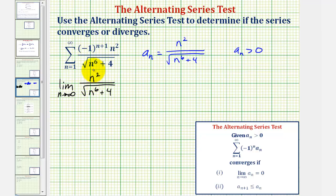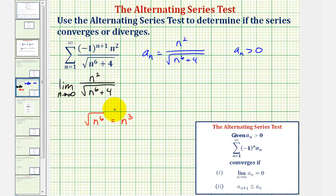Notice how the numerator is degree two. Looking at the denominator, the plus four is irrelevant as n approaches infinity, so we can think of the denominator as just the square root of n to the sixth, which simplifies to n to the third. So the numerator is degree two and the denominator we can think of as degree three. Because the degree of the denominator is higher than the degree of the numerator, the denominators are increasing faster, and this limit is equal to zero.